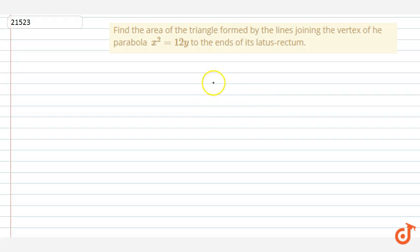In this question we have to find the area of the triangle formed by the ends of the latus rectum and vertex of the parabola x² = 12y. This will be the focus of the parabola.